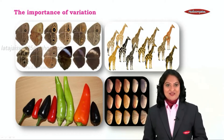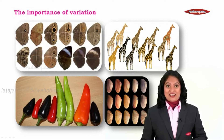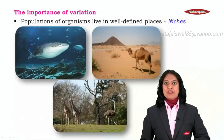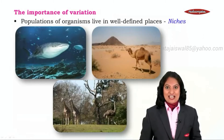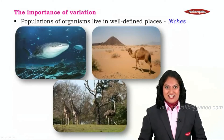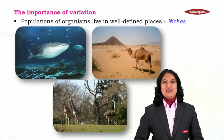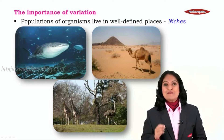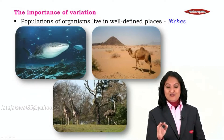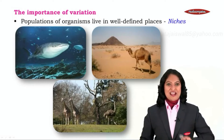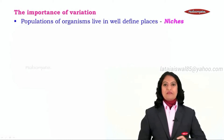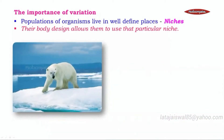But along with creating diversity, are they important for living organisms, for their survival? Let us understand this. Populations of organisms live in well-defined places called a niche. While studying ecosystems, we studied the concept of niche — a place where an organism lives and the role it performs in its habitat or ecosystem. Their body designs allow them to use that particular niche.